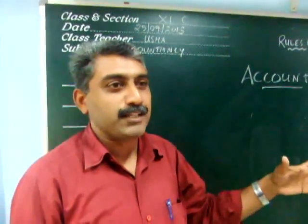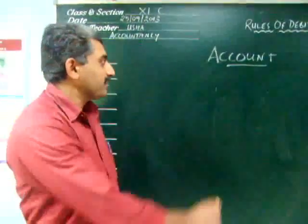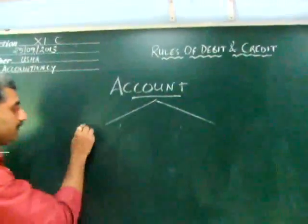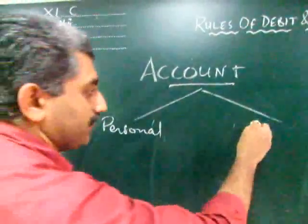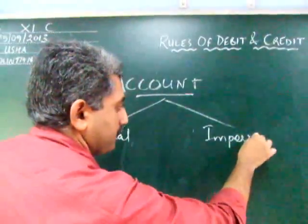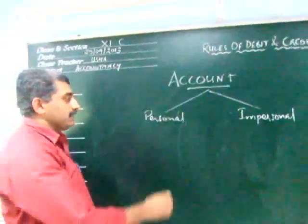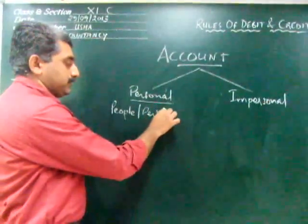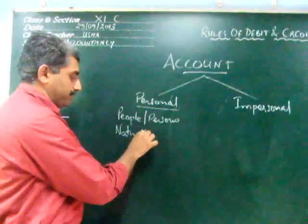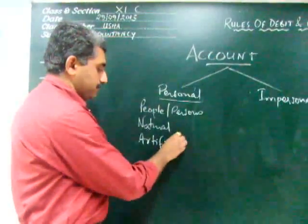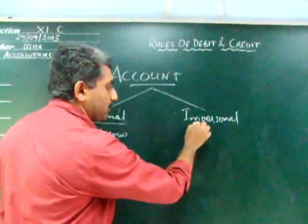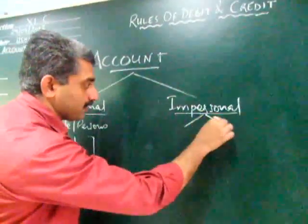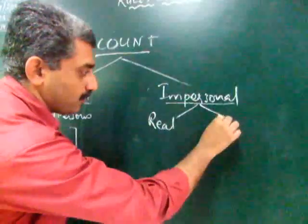An account tells us that there is a place for each and every type of transaction. Accounts are divided into two types: one is called personal account and the other one is called impersonal account. Personal account, as the name indicates, relates with people or persons. Impersonal accounts are those which are not personal accounts and are further divided into two: real account and nominal account.